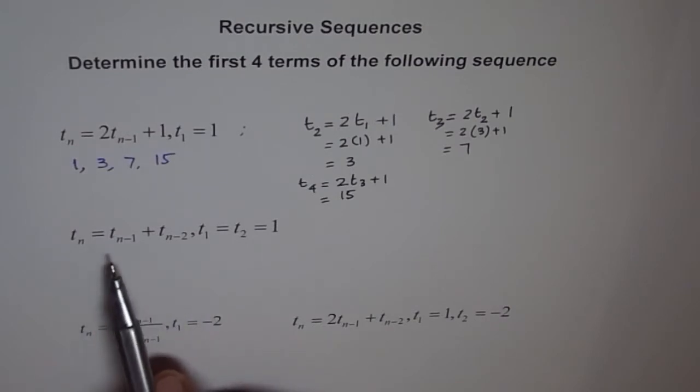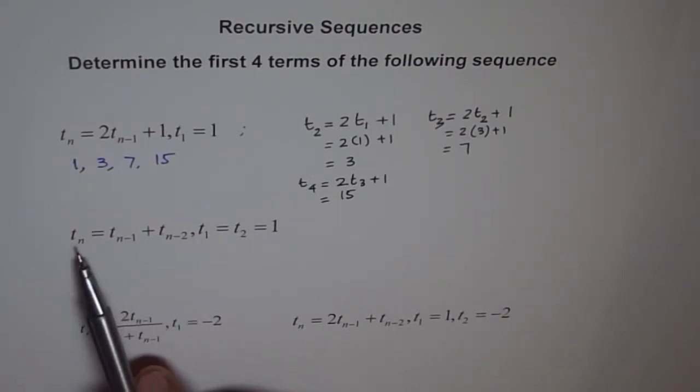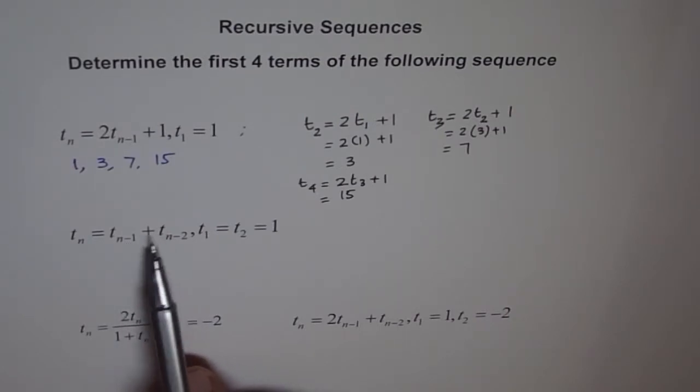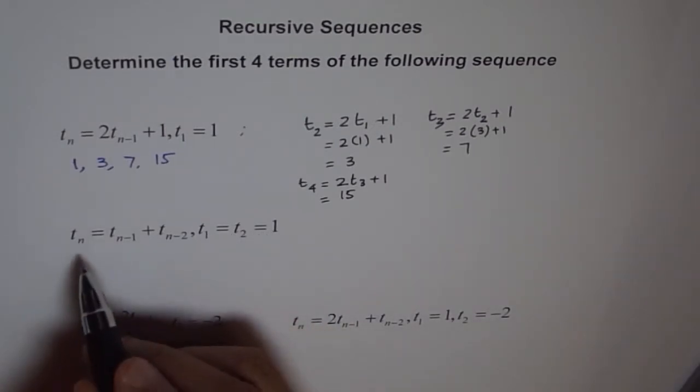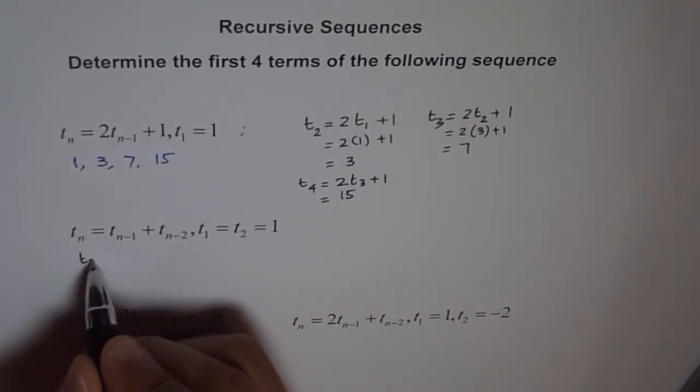Now here in this question, to find this value we have to use previous two values. N minus 1 means previous value and N minus 2 is previous to that. We have given T1 and T2, so we can find T3. If I write 3 instead of N, I get T3 equals T3-1 plus T3-2.